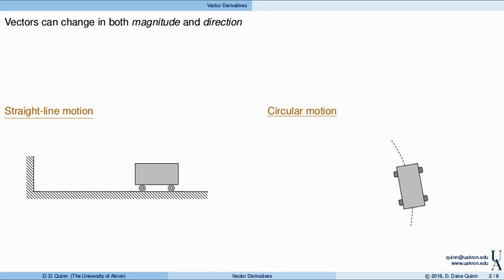When I look at that fundamental law, it basically relates the external forces to how something changes — in this case, the velocity, or the second derivative of position. So the laws of mechanics are really describing change. And the quantities we are interested in — forces, accelerations, velocities, and position — are all vectors. So it makes sense that we need to understand how to describe changes in vectors, and change is represented by derivatives.